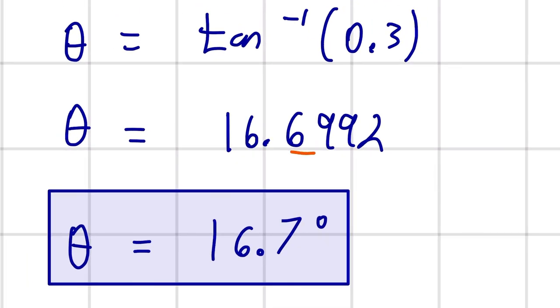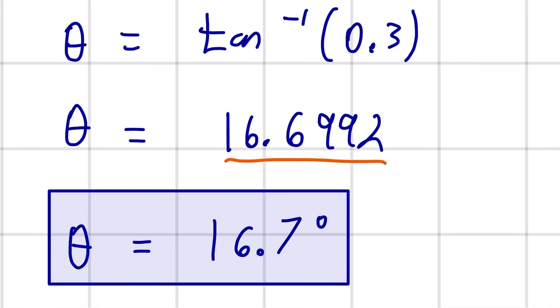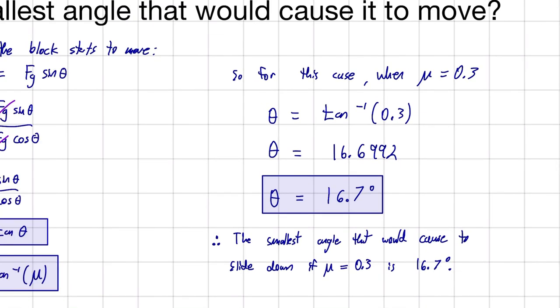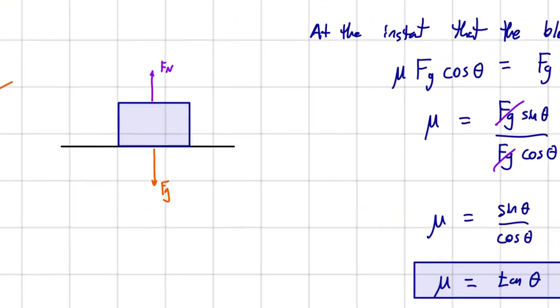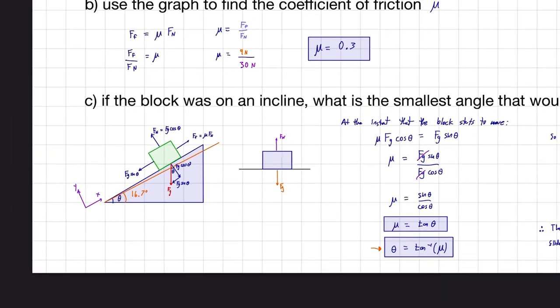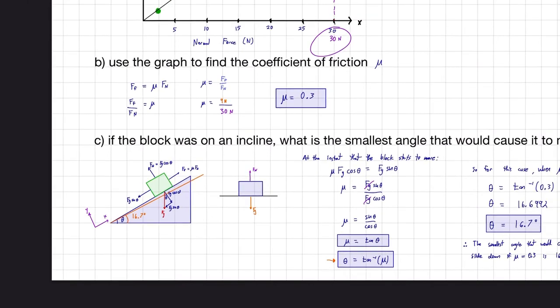And sometimes in your answer, this isn't a value you want to round down because anything less than 16.692 will not cause the block to move, so you always want to round this decimal up. But anyways that is the end of this problem, that is the solution.